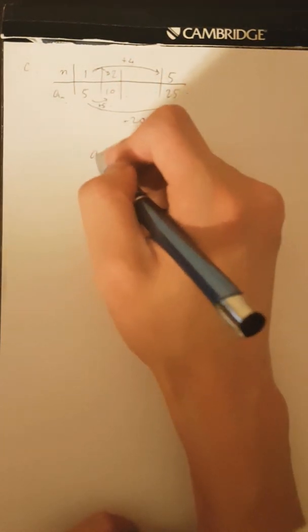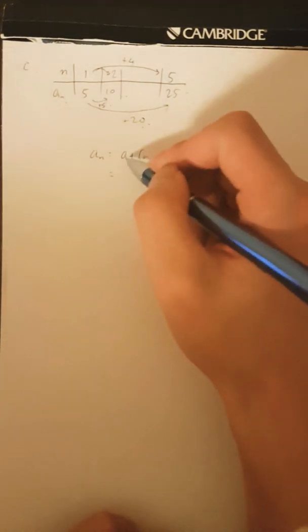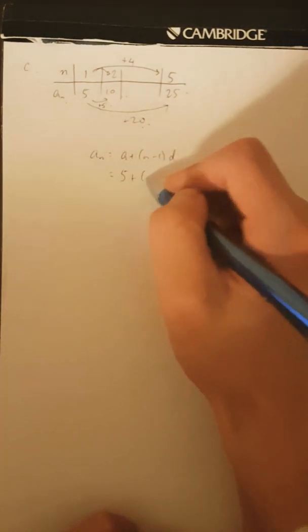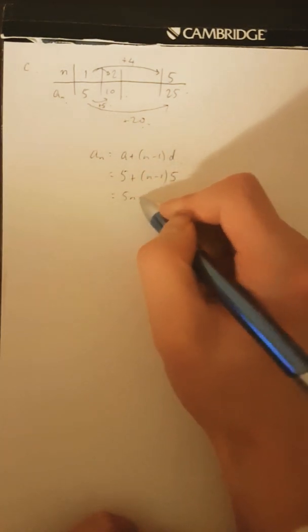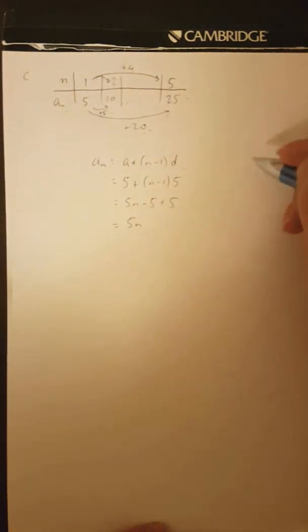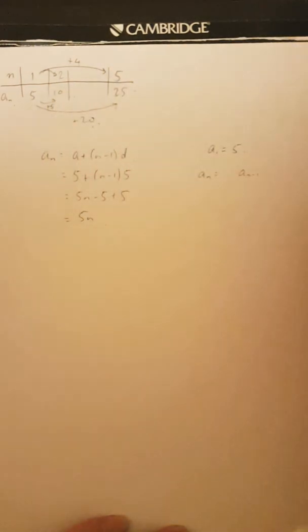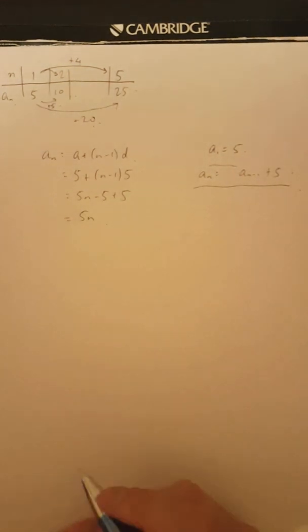Once you know this, you basically know everything. So A_N is going to be, since it's an arithmetic progression: first number five plus N minus one times common difference five. So it's going to be five plus five N minus five, which equals five N. And for the recursive form, you state the first number, which is five, and then you relate the Nth number with the N minus one number — from the previous number, we add five to get the next number.